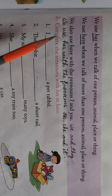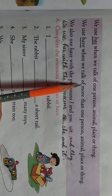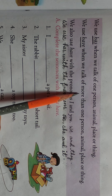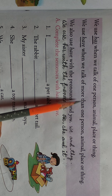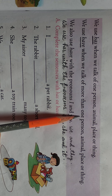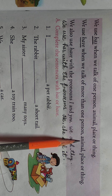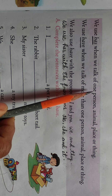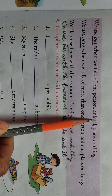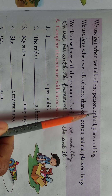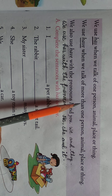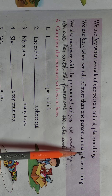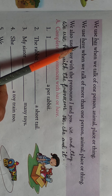Next, the second rule: we use 'have' when we talk of more than one person, animal, place, or thing. Please pay attention, dear children. More than one person — एक से ज्यादा persons, animals, places, things के बारे में बात करते हैं, तभी have use करते हैं. Singular naming words के साथ has use करते हैं, and plural naming words के साथ have use करते हैं.